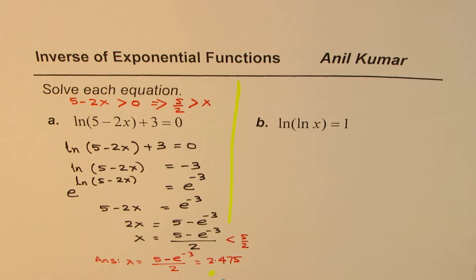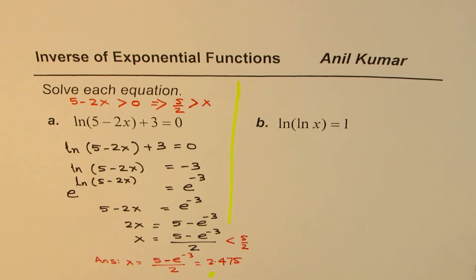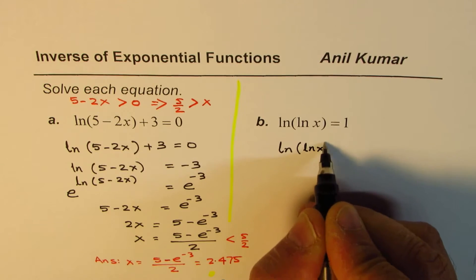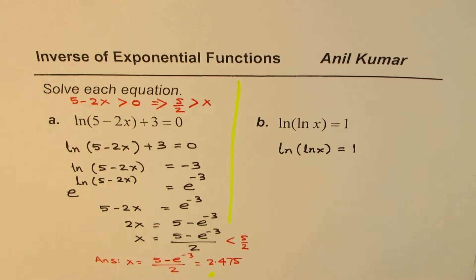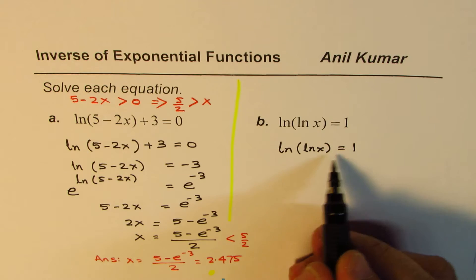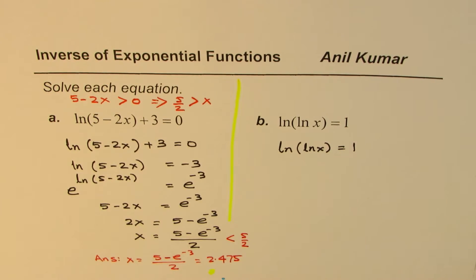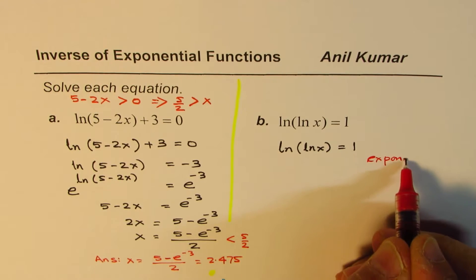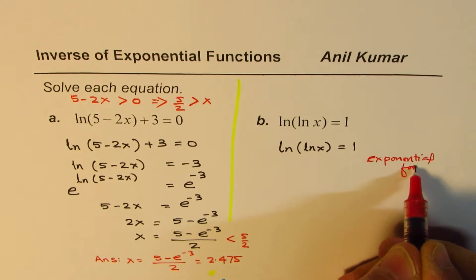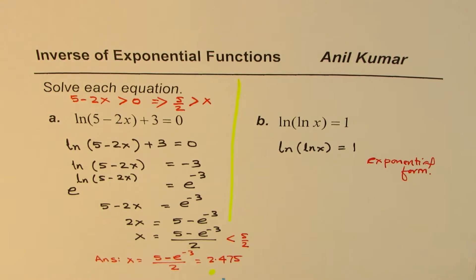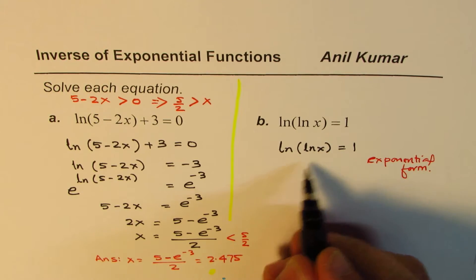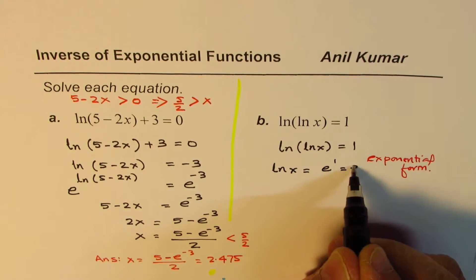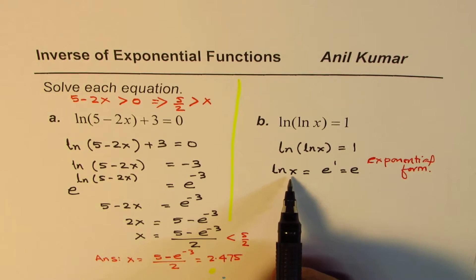Now let's look at the next equation: ln(ln x) equals 1. That's kind of tricky. ln is to the base e, so we can convert this to exponential form. Writing it in exponential form: ln x equals e to the power of 1, which is e.